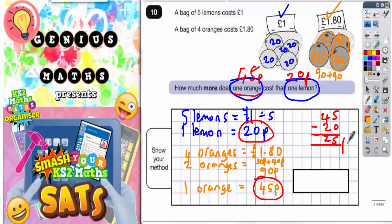The final answer is that one orange costs 25p more than one lemon. You can either write it like that as 25p, or you could write it with a pound sign as £0.25.